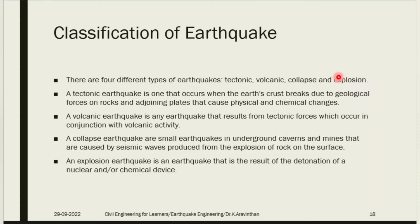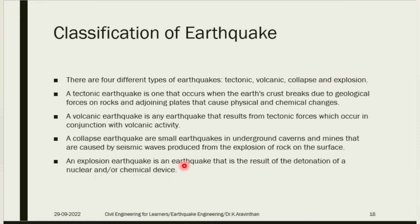The last type is explosion, which is man-made. Tectonic and volcanic earthquakes are natural. But collapse and explosion are man-made. If you are making tunnels that is the collapse mode, and mining is for man-made purposes. Explosion can also occur due to a war field or nuclear explosion, and due to that explosion an earthquake might occur.